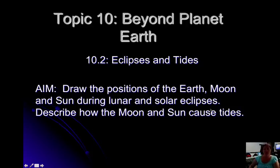Hello, welcome back. This is section 10.2, Eclipses and Tides. Our aim for today is to draw the positions of the Earth, Moon, and Sun during lunar and solar eclipses, and also to describe how the Moon and Sun cause tides.